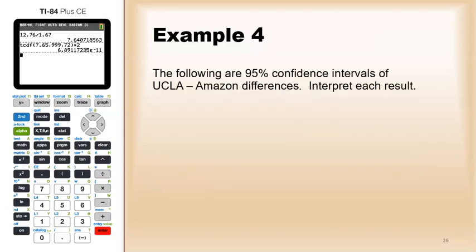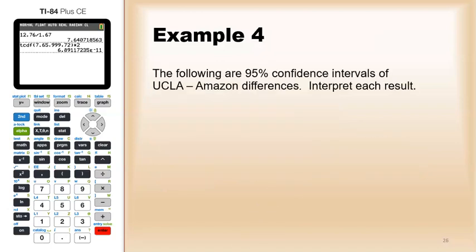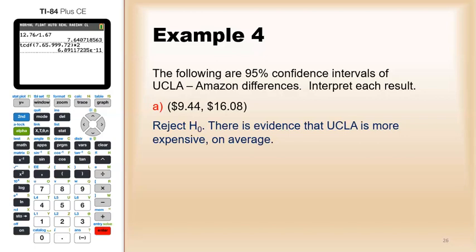All right. What if we had different confidence intervals? We end up with numbers that were both positive. That means the null value of zero is to the left, is below those numbers. So, that's the same thing as rejecting. So, if I had 944 to 1608, we would reject the null hypothesis. There is evidence that UCLA is more expensive.